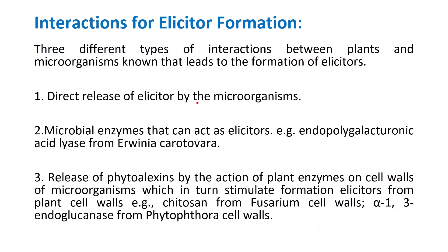There are three types of interactions between plants and microorganisms that lead to elicitor formation. The first is direct release of elicitors by the microorganism. If a microorganism is introduced into the culture with the plant explant, callus, or cells, it may release a compound — such as a toxin — that directly acts as an elicitor to produce a secondary metabolite response in the plant culture.